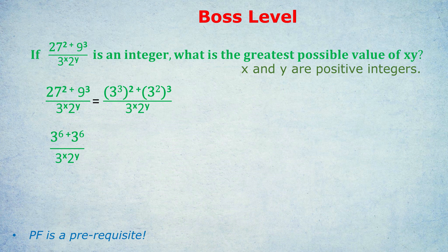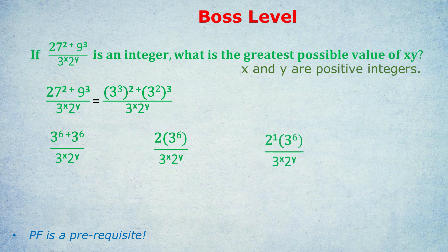We've got 1 3 to the 6 plus another 1 3 to the 6, giving us 2 3 to the power of 6. And if we're being professional, how do we write that? 2 to the power of 1 times 3 to the power of 6. Remember, a number on its own gets that power of 1.